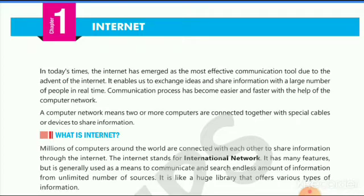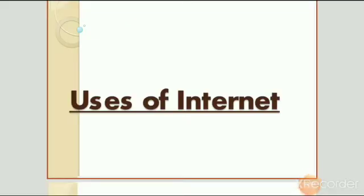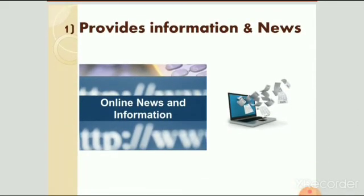Internet can be used for almost all types of work, as most of our work is done on internet only. The first use of internet is that it provides information and news. It provides information on any topic — we can search information anytime and anywhere on the internet using different search engines. We can search about any topic and also see news from the whole world on the internet.